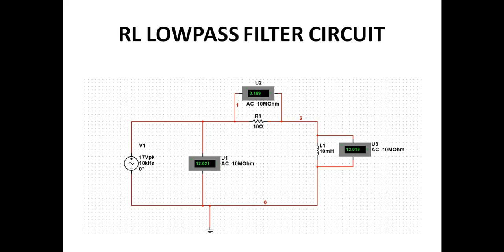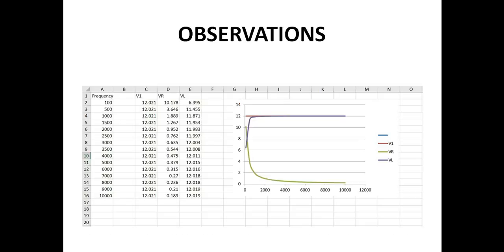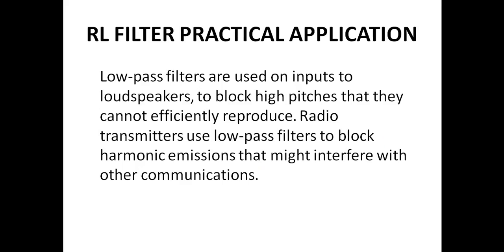Next is the RL filter circuit diagram. Then come the observations that we receive from the RL filter circuit. The practical application of the RL filter is that it is used in radio transmitters to block harmonic emissions that might interfere with other communications.